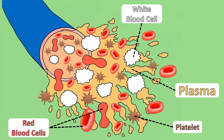Taking a look at the image on screen, this depicts each of the four components of blood. We can see how, if you look into a blood vessel with a microscope, you'd see red blood cells, white blood cells and platelets all floating in liquid plasma.